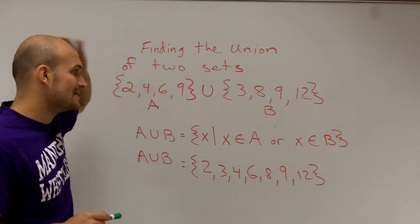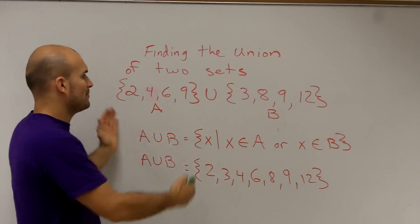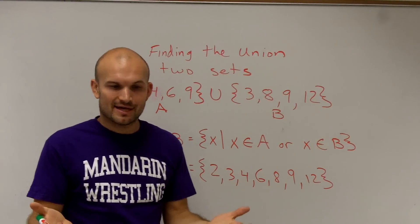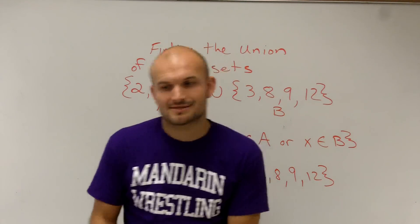What you notice is when I did the union of those two sets, I pretty much just took all the elements of A, all the elements of B, and brought them together. And that's how you find the union of two sets.